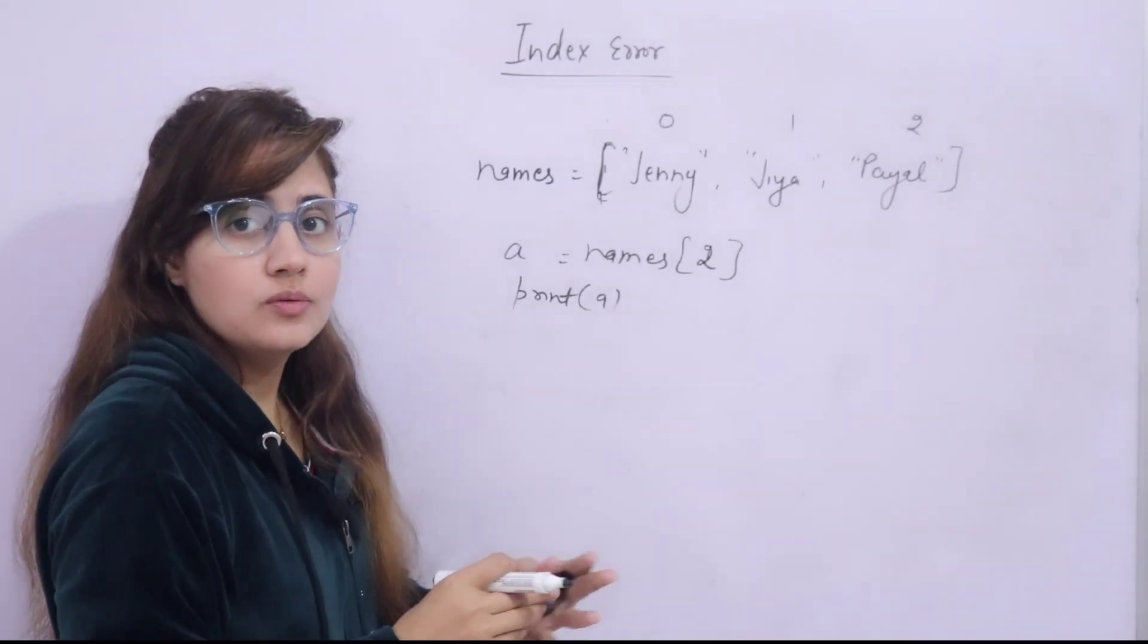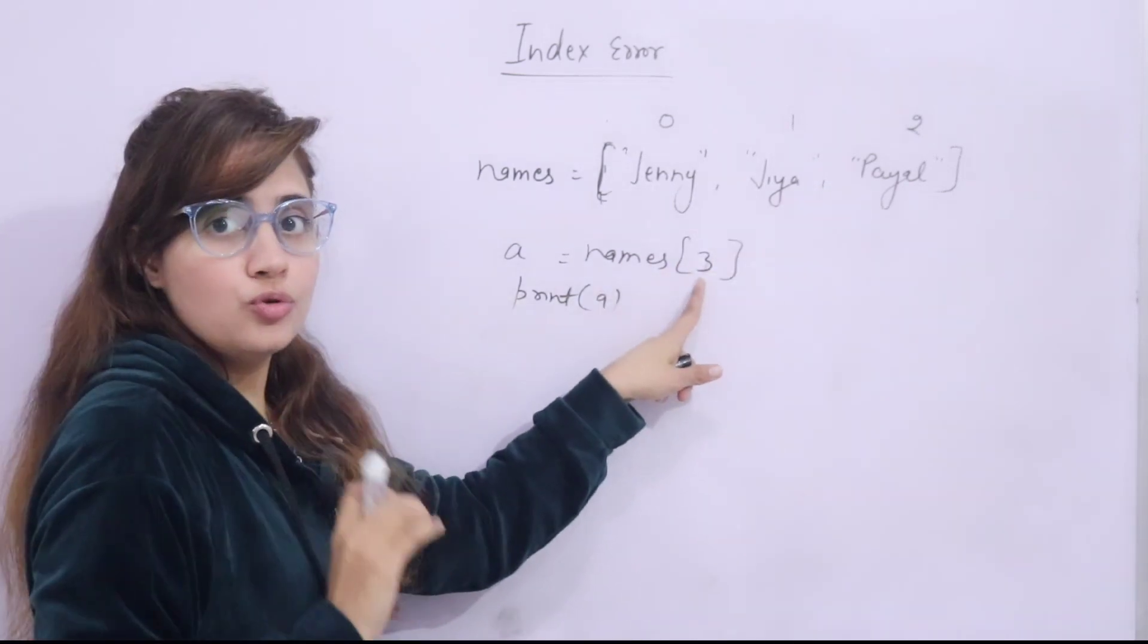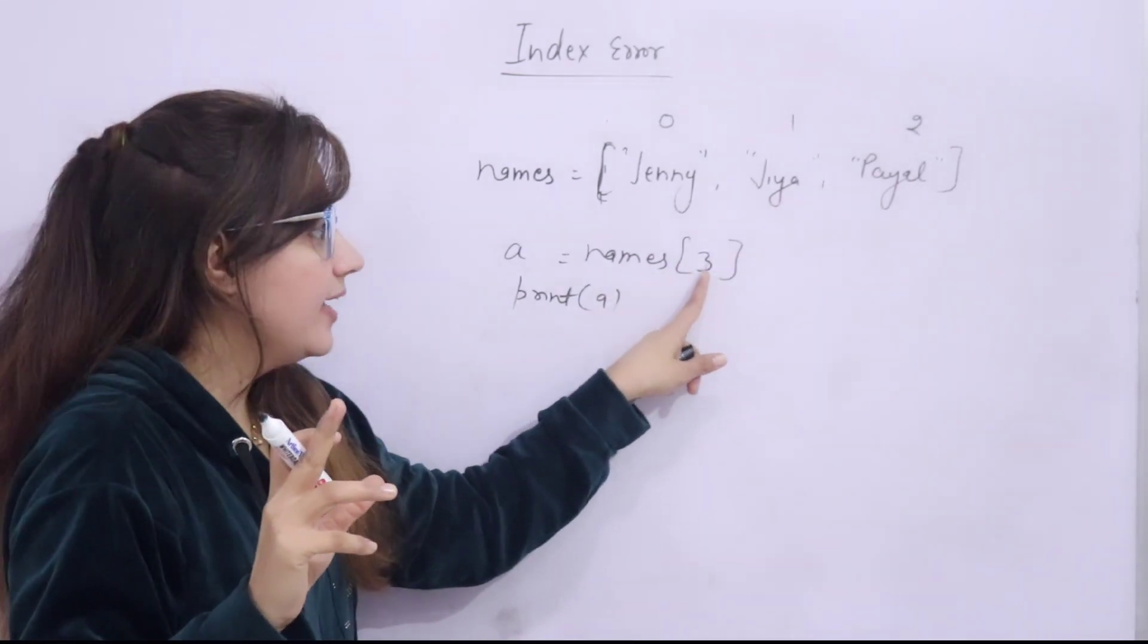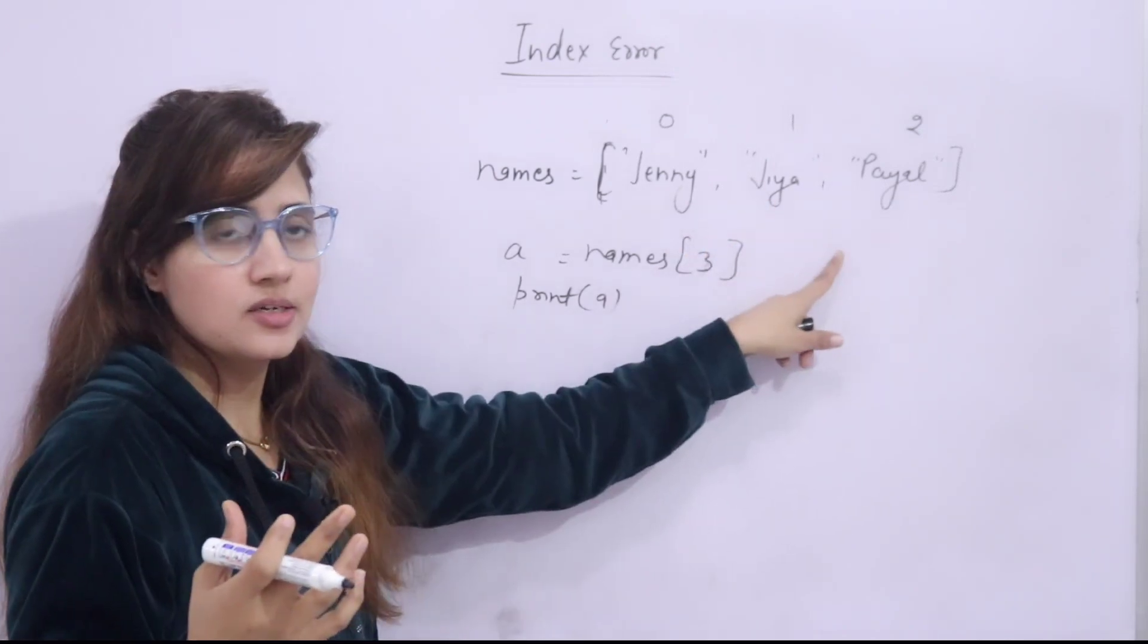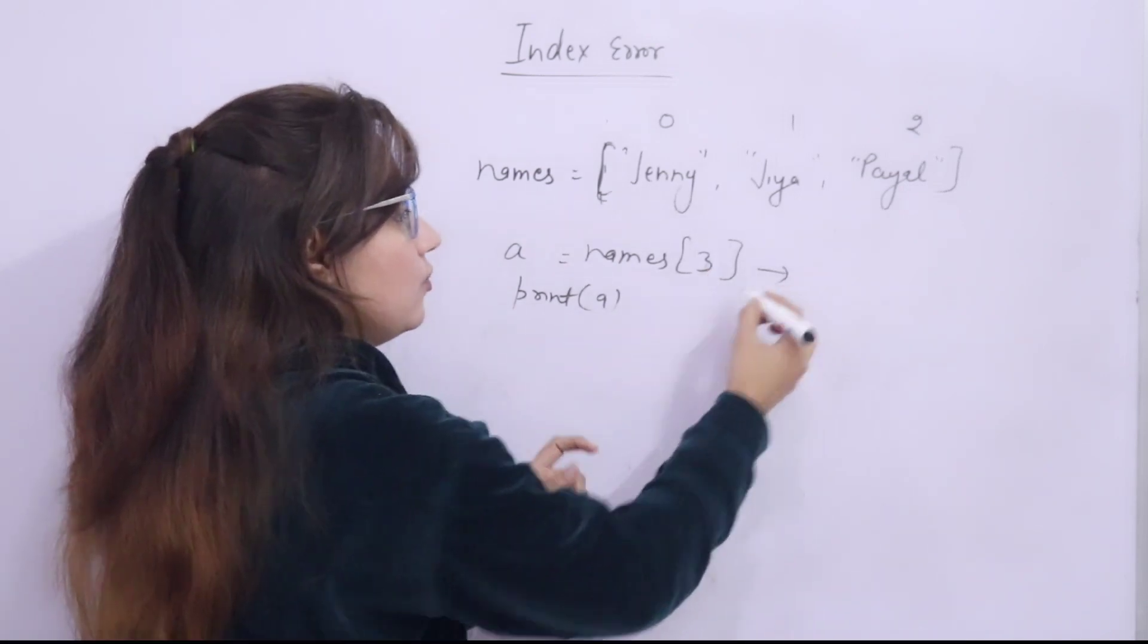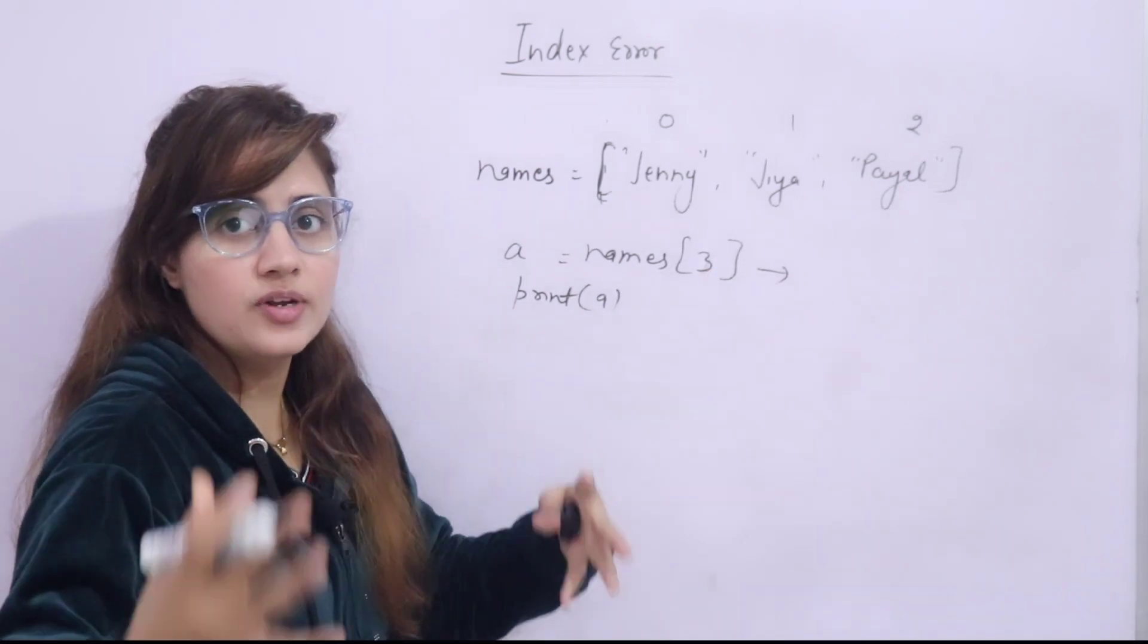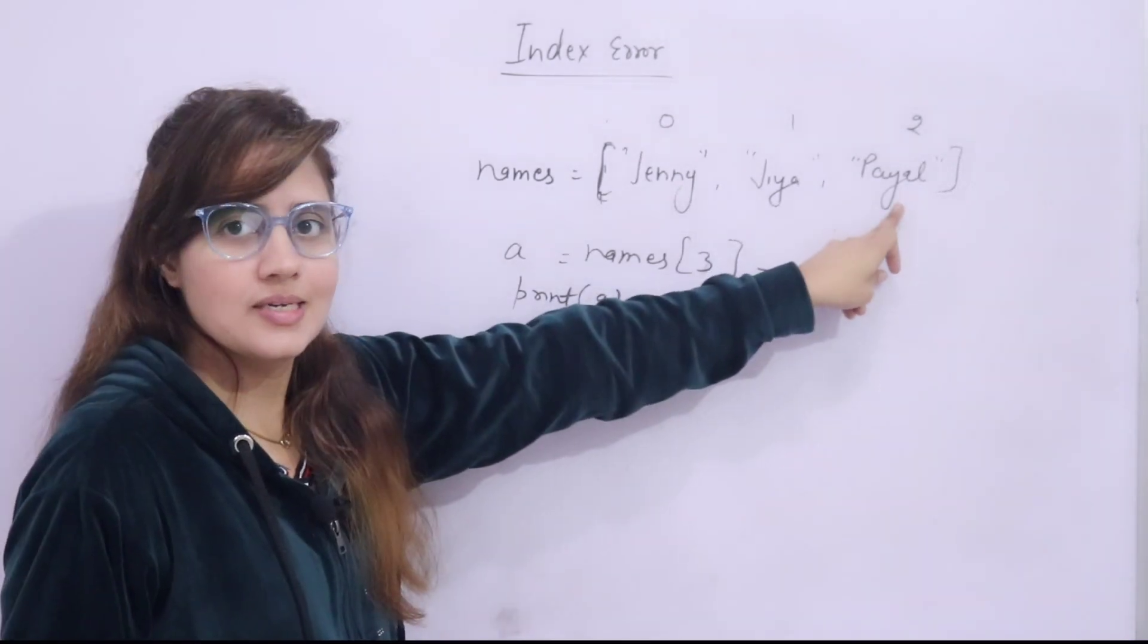If you want to access Payal, then what index you will pass? 2. Then it will give Payal. But generally what we do? We pass, suppose, 3, like 1, 2, 3. So you are going to access the index which is invalid, which doesn't exist in this list. Is 3 any index? No. So this time it will give index error. The list index out of range. Generally it occurs when we want to access the last element.